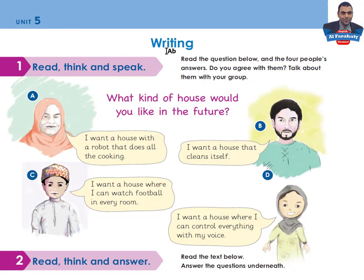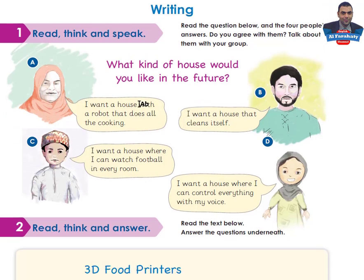Unit 5, Writing section, Activity 1: Read, Think and Speak. Read the question below and the four people's answers. Do you agree with them? Talk about them with your group. The question is: What kind of house would you like in the future? Let's read the answers: I want a house with a robot that does all the cooking. I want a house that cleans itself. I want a house where I can watch football in every room. I want a house where I can control everything with my voice.